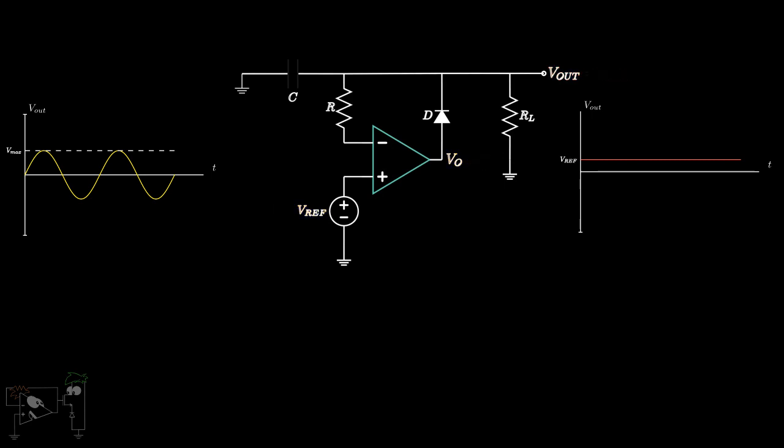Now let's consider the AC input at the inverting terminal. The capacitor is assumed uncharged in the beginning. During the negative half cycle, V- is negative and hence V- is less than V+. This means the op-amp output becomes positive. Thus the diode conducts. Due to this, the capacitor C is charged till the peak value of the input, Vmax.